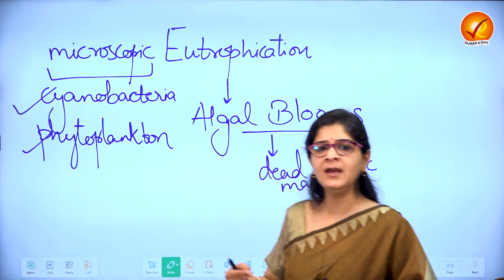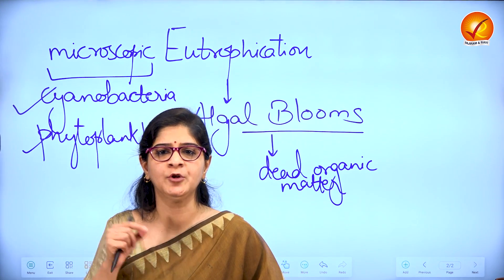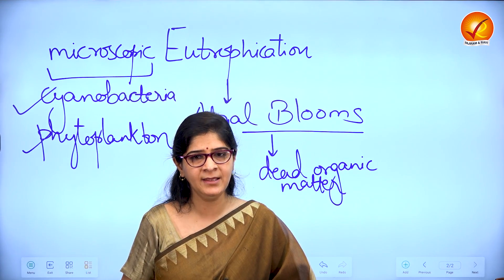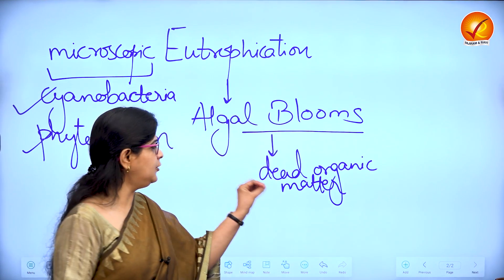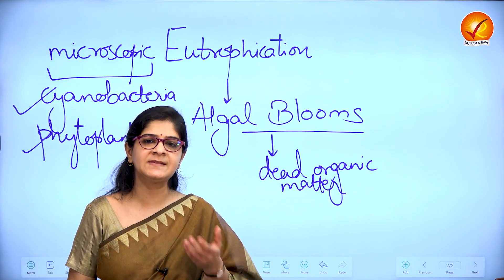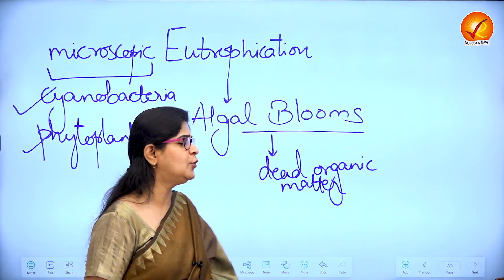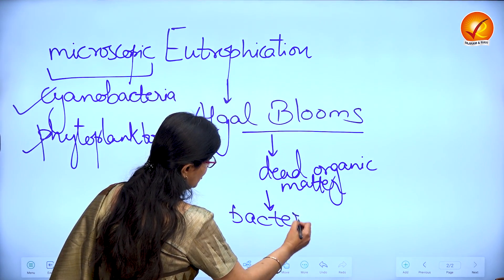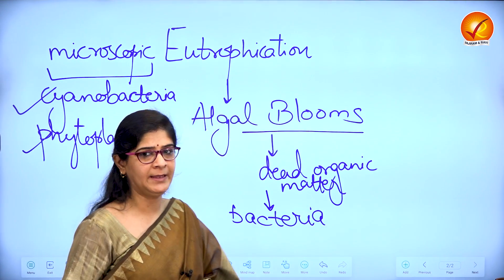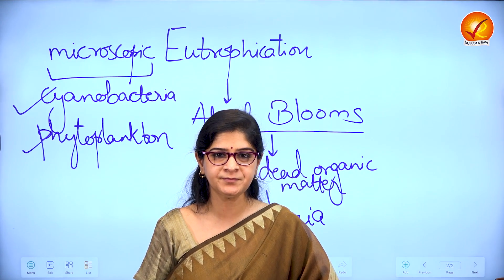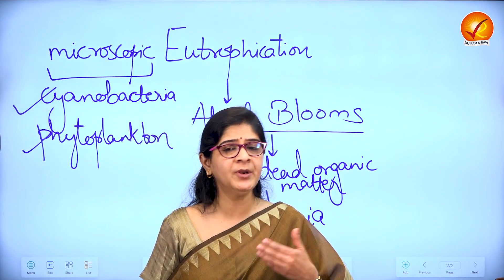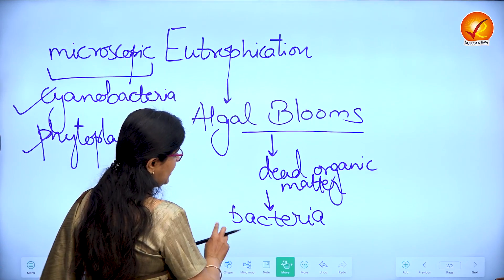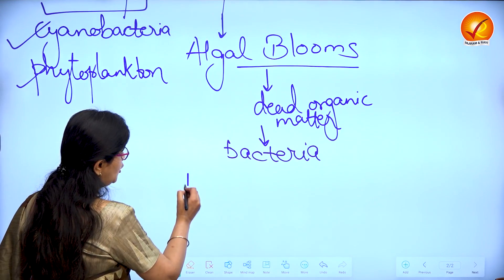These algal blooms are going to have adverse consequences for the health of the water body. Eventually, the algae will die, and as it dies, the quantity of dead organic matter in the water body increases. As dead organic matter increases, the decomposing bacteria proliferates as well. This bacteria will bring about decomposition of the dead organic matter, and during this process the bacteria will rapidly consume the dissolved oxygen of the water body, causing dissolved oxygen to reduce.